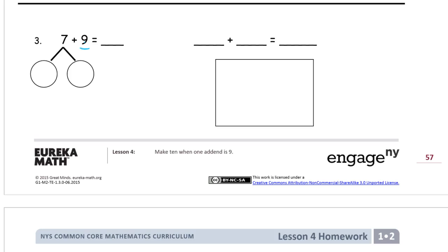Here's the 9. Now for the 7, we're going to need a 1 and a 6. You'll see how this works out in our picture. So the 9 is 1, 2, 3, 4, 5, 6, 7, 8, 9.